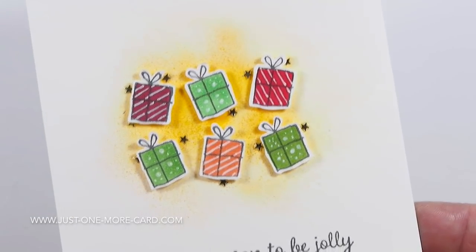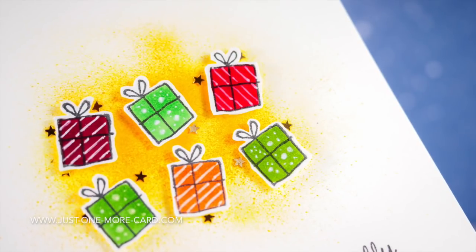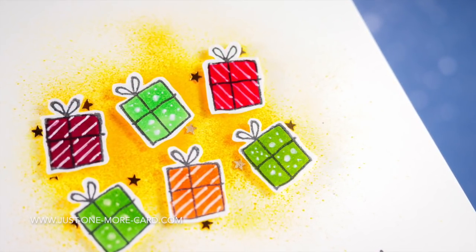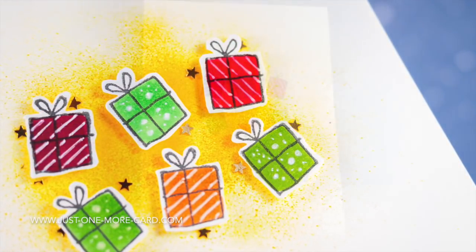Here we go. There you can see the sparkle. It's a very simple and clean design. Basically, the only thing that makes it stand out is like the white border around those packages against the yellow background. And then the little sparkle that we add with the star sequins.